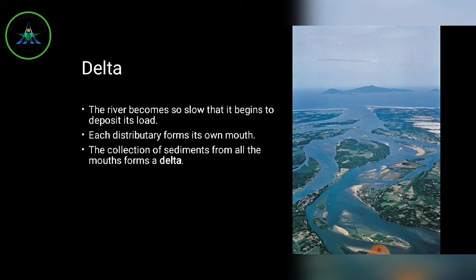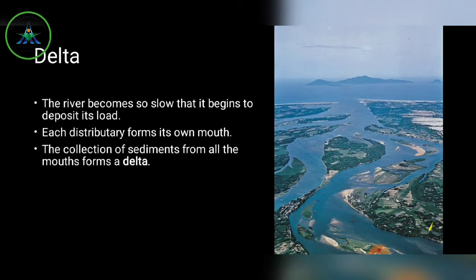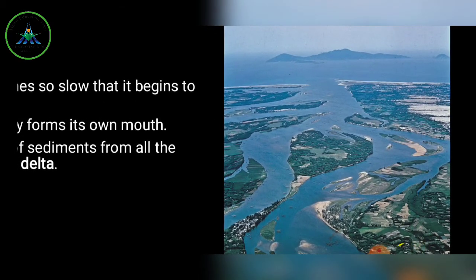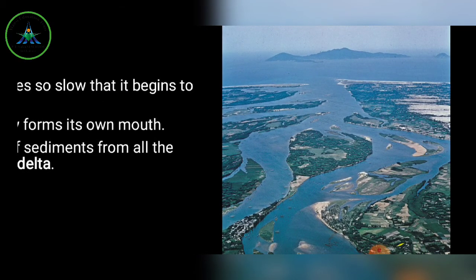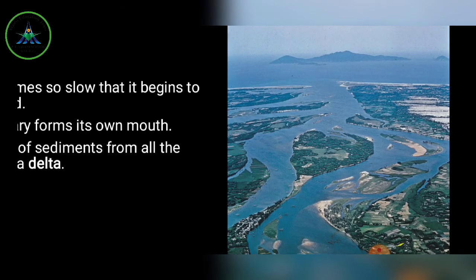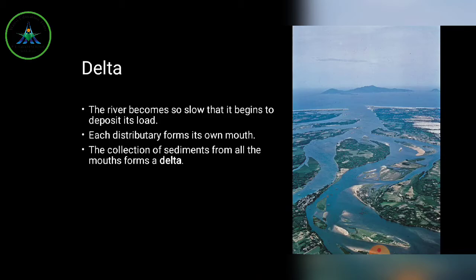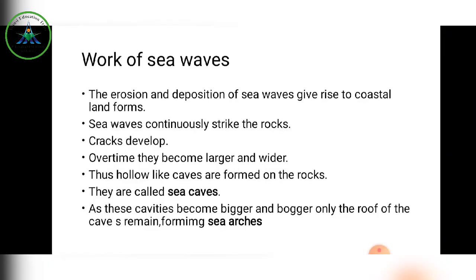The river becomes so slow it begins to deposit its load — all the sediments it has collected. Each distributary forms its own mouth. The collection of sediments from all the mouths forms a delta. This is the complete work of a river as an exogenic force.